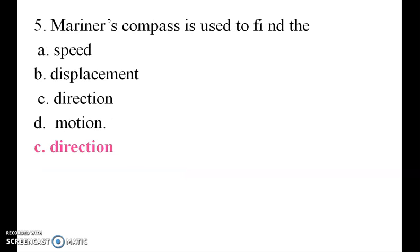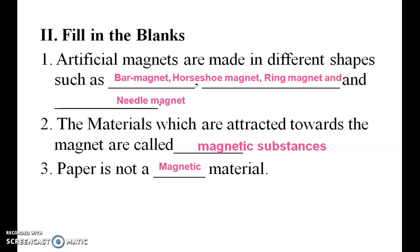The mariner's compass is used to find direction. Fill in the blanks: Artificial magnets are made in different shapes such as bar magnet, horseshoe magnet, ring magnet, and needle magnet.